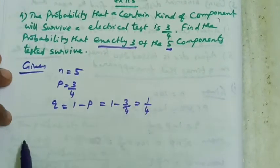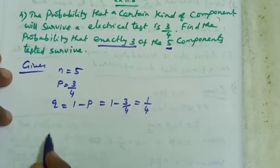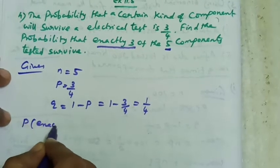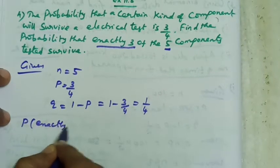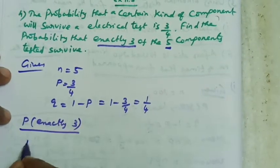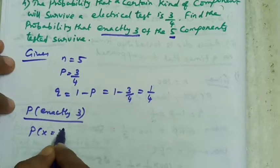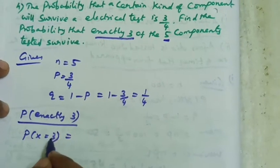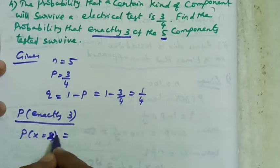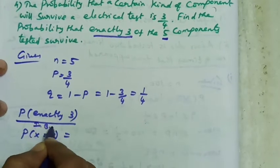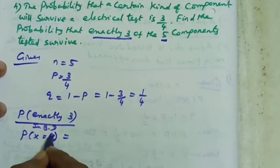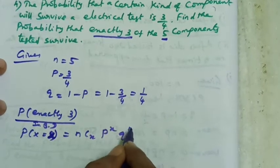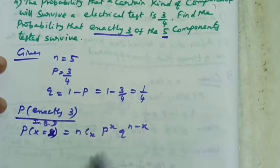We can find the probability that exactly 3 of the components tested survive. P of X equal to 3. Using the binomial distribution formula: P(X = x) = nCx · p^x · q^(n−x).